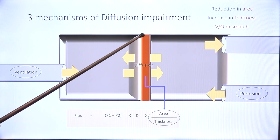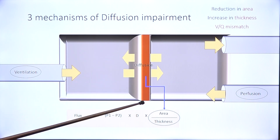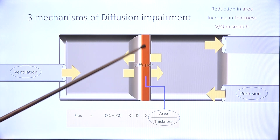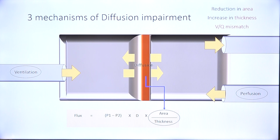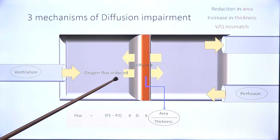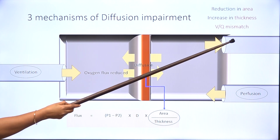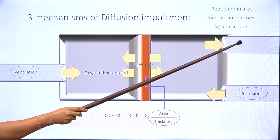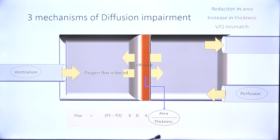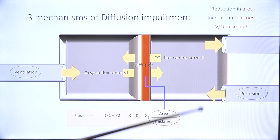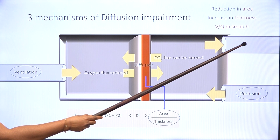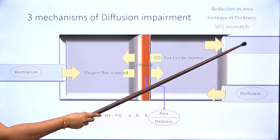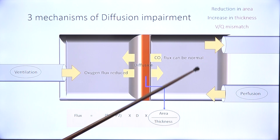VQ mismatch can be equated to diffusion impairment or reduction in surface area in fact. In diffusion impairment, oxygen flux is reduced and partial pressure of oxygen in the arterial blood will be lower — what we call arterial hypoxia. However, carbon dioxide flux can be normal and arterial concentration of carbon dioxide or PaCO2 will be normal or in fact low in diffusion impairment.